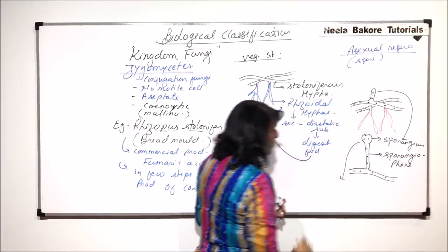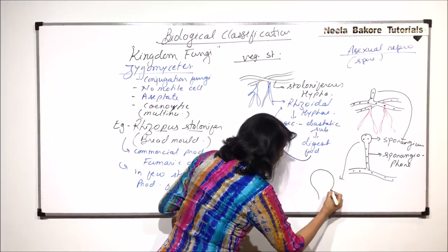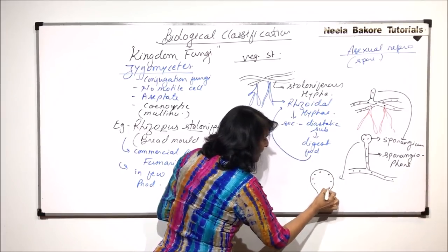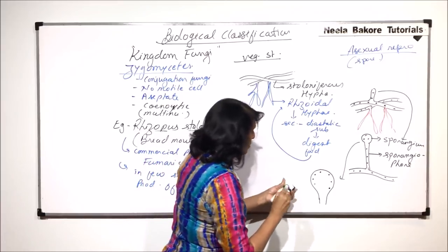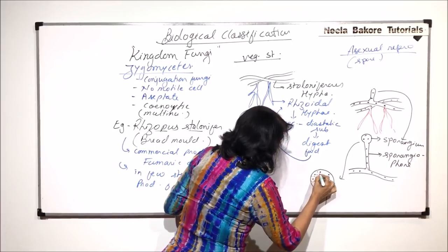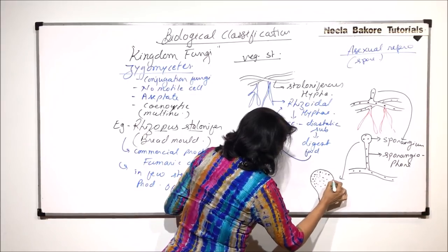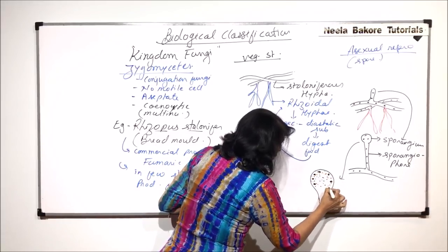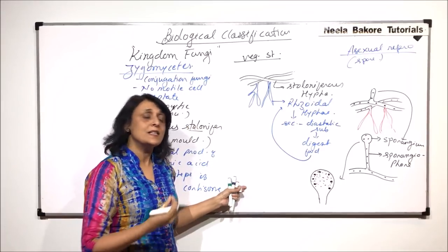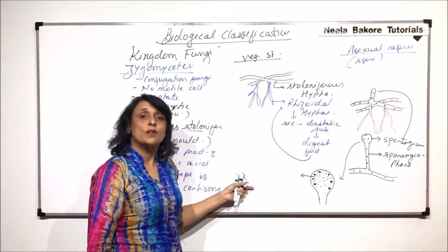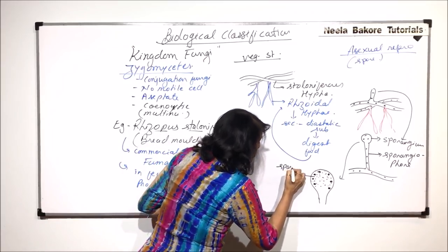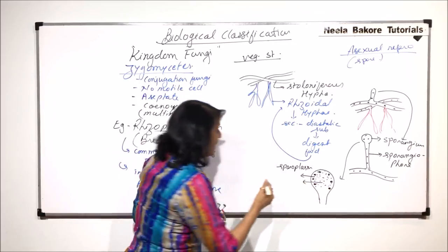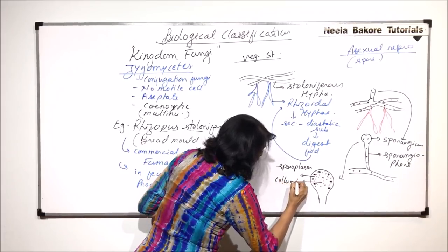What happens in this sporangium is, if we see only this upper part, we find that the nuclei migrate towards the periphery and here there is cytoplasm also with the nuclei. Cytoplasm is in the center also. We start giving these cytoplasmic areas names. The outer cytoplasm which is going to give rise to the spores is known as sporoplasm and the inner one which will form a structure called columella, we call it columella plasm.